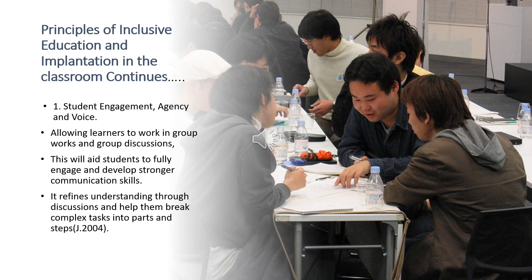Now, the last principle of inclusive education and its implementation in the classroom — number three: student engagement, agency, and voice. This is where we allow students to work in groups and do group discussions or engaging debates. I believe this will aid students to fully engage and develop stronger communication skills. Since we have some students who are introverts, this will go a long way. It will also refine understanding through discussion and help them break complex tasks into manageable parts and steps.